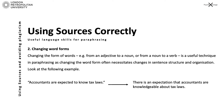Another thing you can do is change the word form — from an adjective to a noun, or a noun to a verb. By doing this, you change the sentence structure and organisation, which helps the entire paraphrasing. For example, the original text 'Accountants are expected to know tax laws' can become 'There is an expectation that accountants are knowledgeable about tax laws.' The entire structure and organisation is changed, and there probably won't be much similarity.